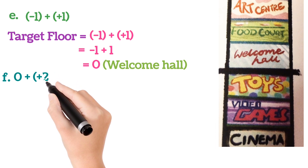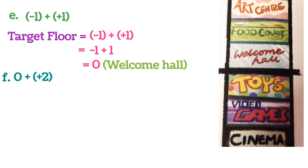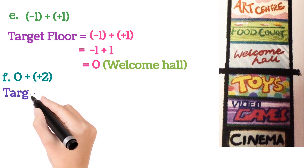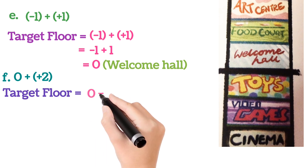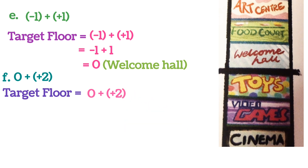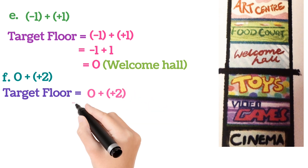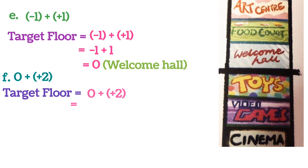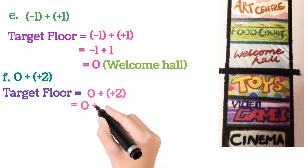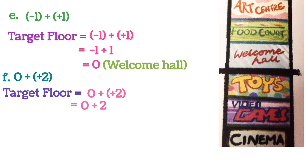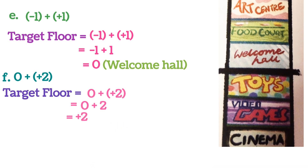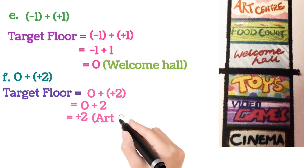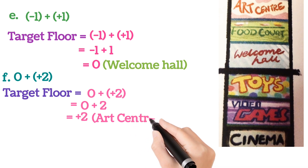Sum number F: we will find out the target floor. We are on the ground floor, that is 0, and we press the plus 2 button inside the lift. Remove the bracket: 0 plus 2. All of you know what will come — 0 plus 2 is 2. We reached the 2nd floor. What is there on the 2nd floor? There is the art center. We reached the art center.